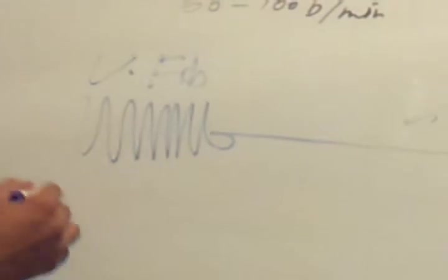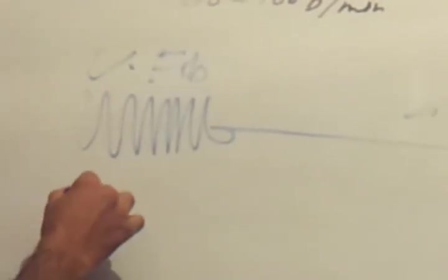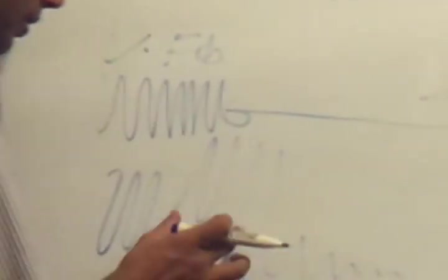After that, torsades de pointes. It will never rise up or lower. The point above the isoelectric line, it will rise up and then go down. Torsades de pointes.